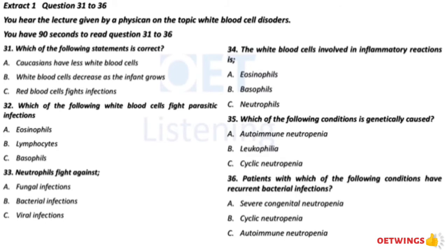White blood cells are predominantly involved in fighting infections and participating in inflammatory reactions, while red blood cells carry oxygen to the body. Platelets help stop bleeding. The normal number of white blood cells ranges from around 4 to 11 billion cells per liter. Newborn babies have a higher range, from around 9 to 30 billion cells per liter, which decreases over the first two years of life. Unlike red blood cells, the normal range is not affected by gender. However, it is affected by race — in national studies, African Americans have lower baseline white blood cell counts than Caucasians. There are several different ways to categorize white blood cell disorders: by cause, and by which type of white blood cell is affected.